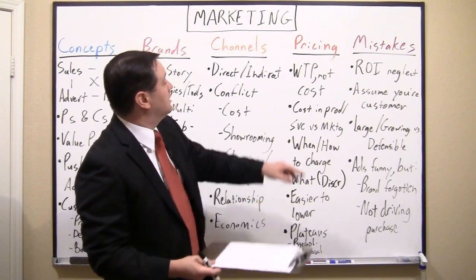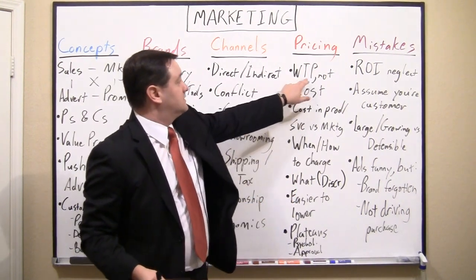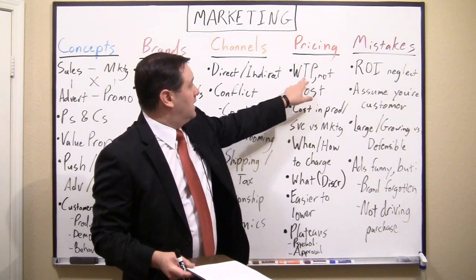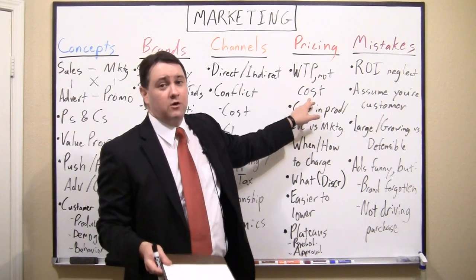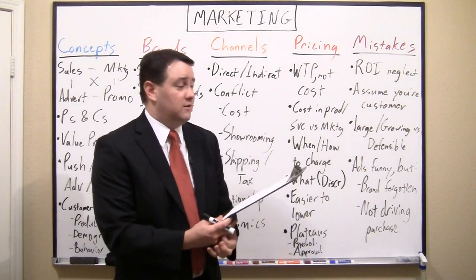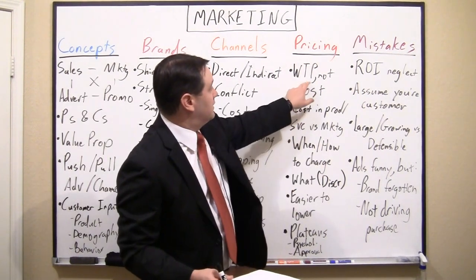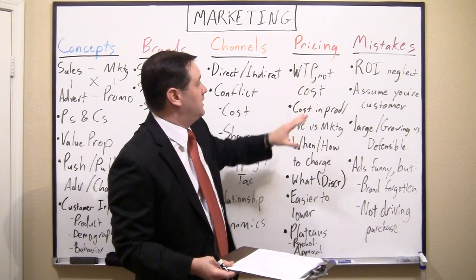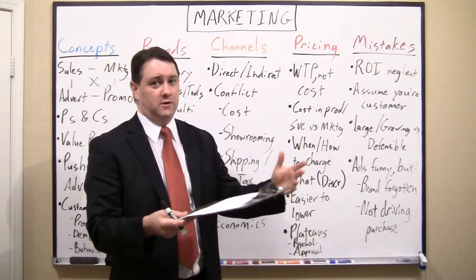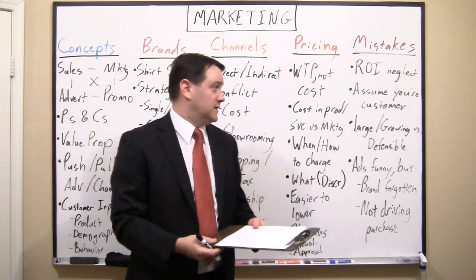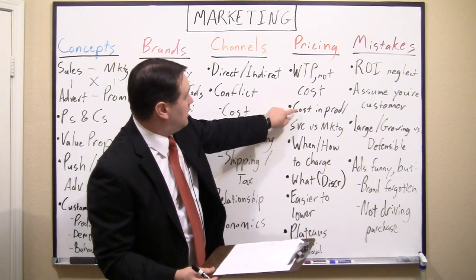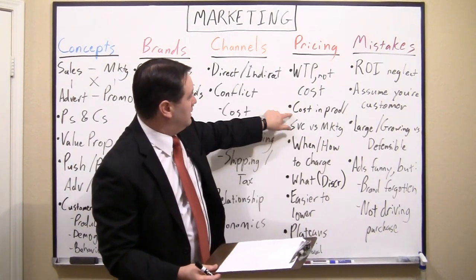Now let's talk about pricing. The first point I always make: pricing is based on willingness to pay, not cost. For example, if you go to a movie theater and a Coke costs five dollars, it did not cost four dollars and eighty cents to produce — it might cost a nickel or a dime. But because you're there, you're willing to pay a premium. That money goes toward the theater, the staff, and profit margin — not the cost of the product itself.